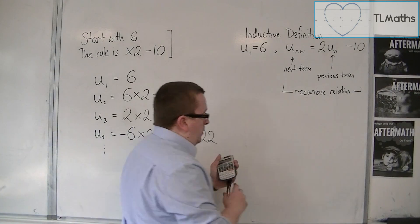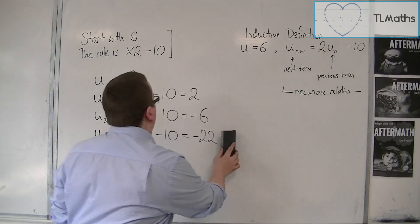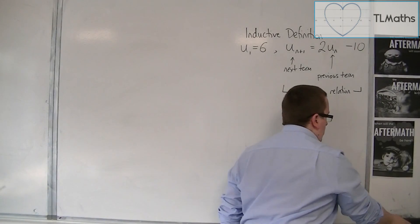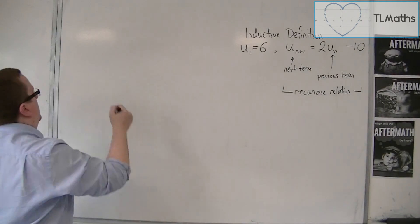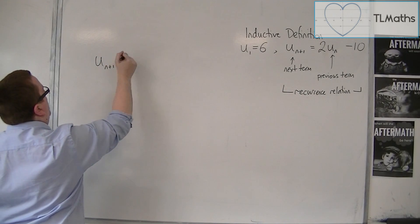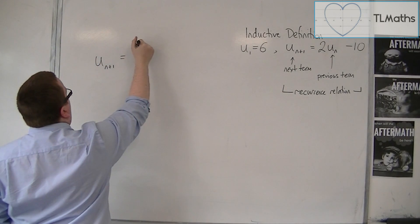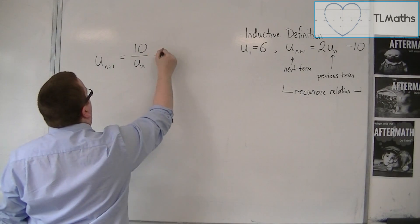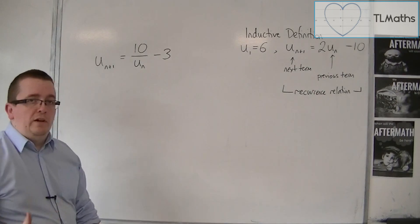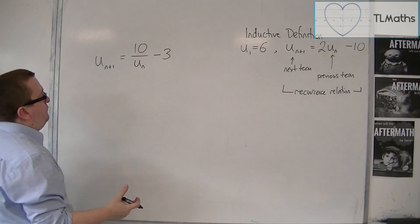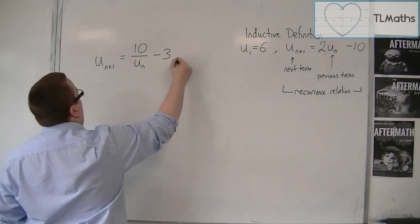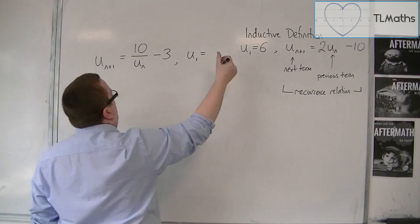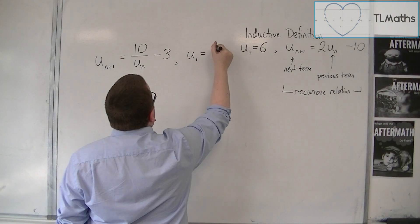So, for example, I could be told an inductive definition like U_{n+1} equals, let's say, 10 over U_n minus 3. And I would also need a starting term, so let's say that U_1 is 100.